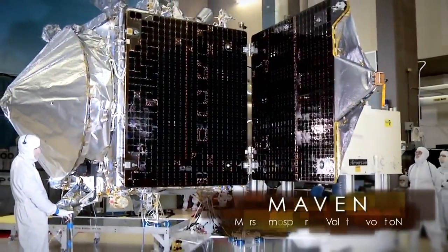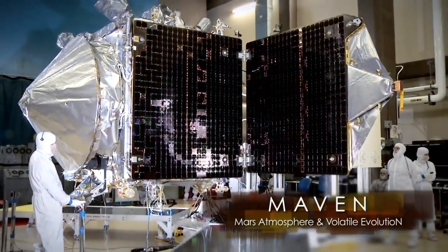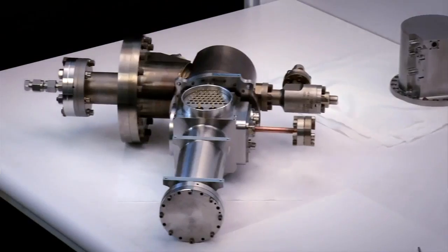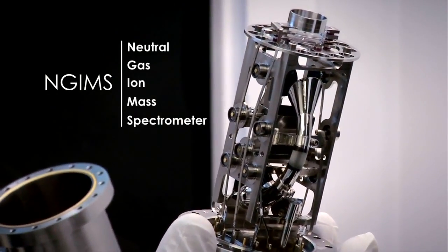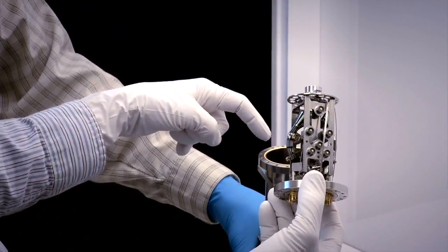MAVEN stands for Mars Atmosphere and Volatile Evolution Mission. The NGIMS experiment on MAVEN is the Neutral Gas and Ion Mass Spectrometer. We have an acronym for everything here at NASA.